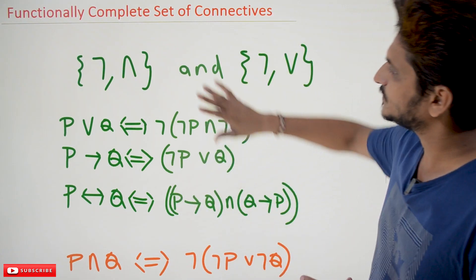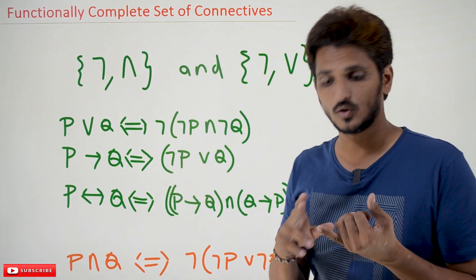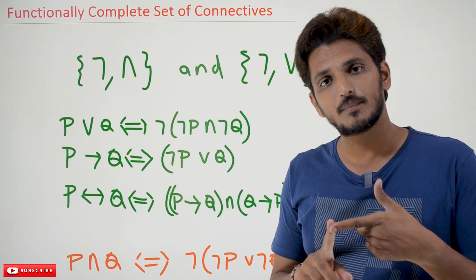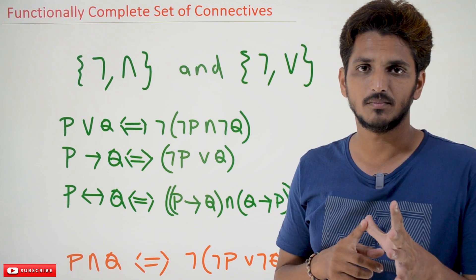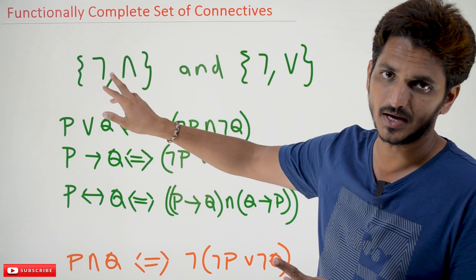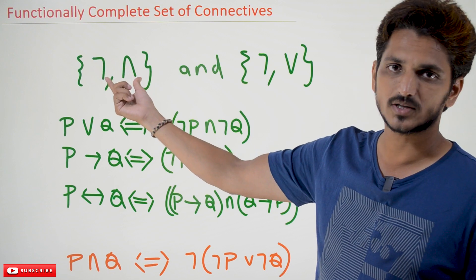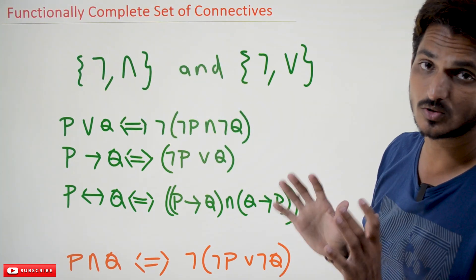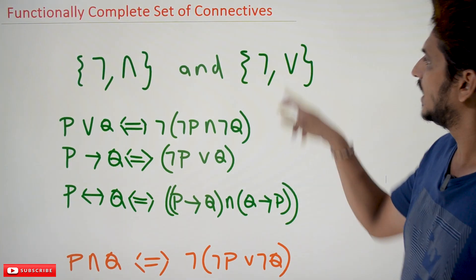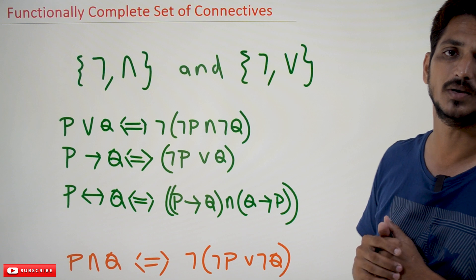Coming to today's class, take these connectives. We know different connectives — negation, conjunction, disjunction, implies, double implies. This set of connectives, we call it as functionally complete. Negation and conjunction — this set we call it as functionally complete. And one more set is also there as functionally complete: negation and disjunction is also called as functionally complete set of connectives.